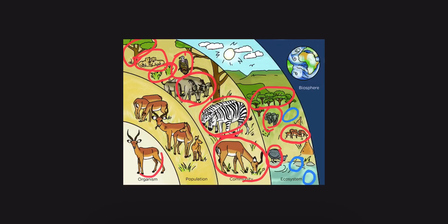So an organism, remember, is one living item. A population is more of the same living item. A community is all living parts of the ecosystem. And the ecosystem is living and non-living things. I hope this video helped you understand a little bit about ecosystems. Thanks for watching. Bye!